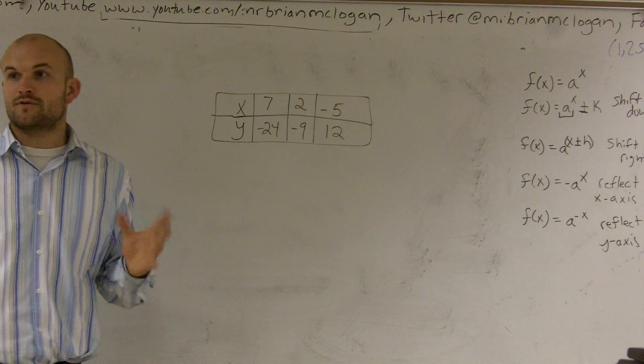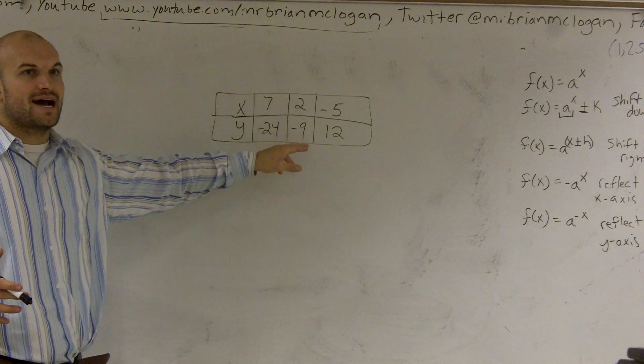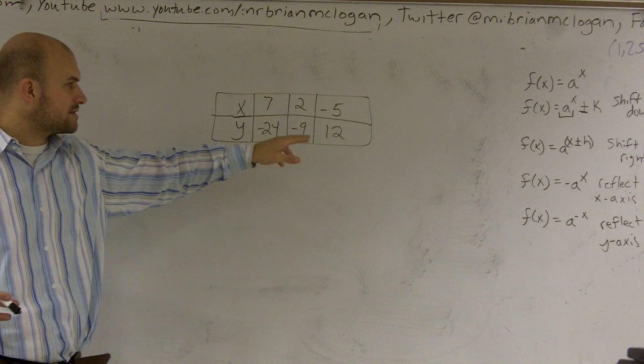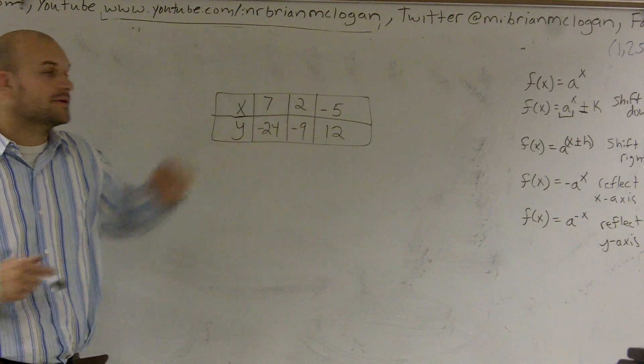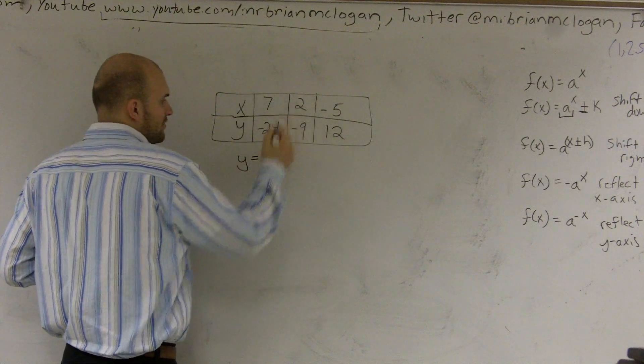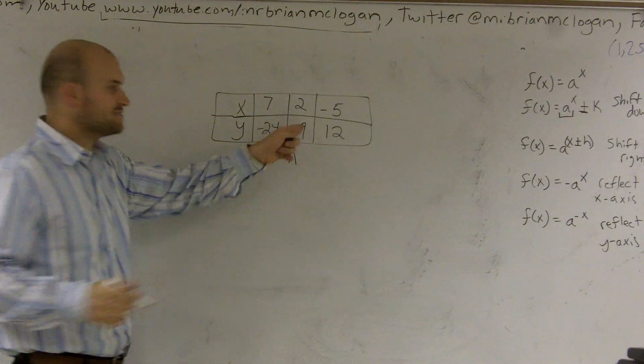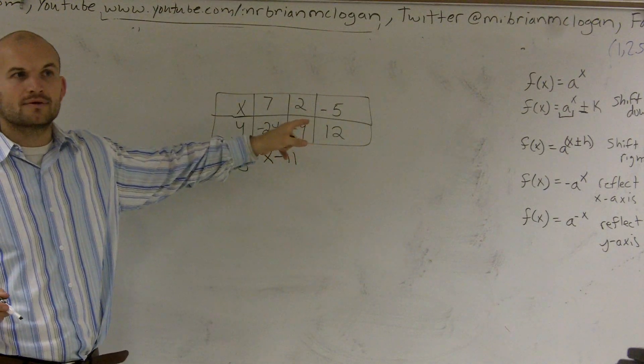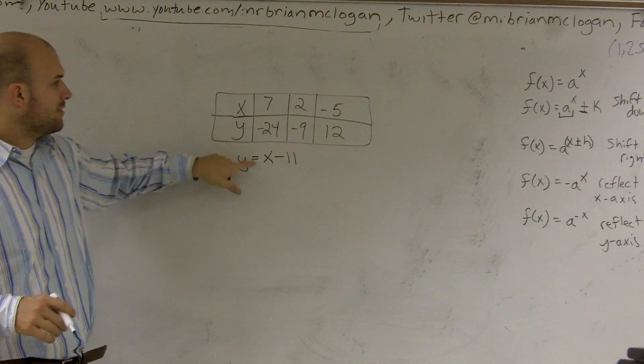the first thing I want to do is let's find a rule for addition or subtraction. So to get from 2 to negative 9, I have to subtract 11. So I can write a rule as y equals whatever my x number, in this case would be 2, minus 11. That gives me negative 9, right? That works for that one.